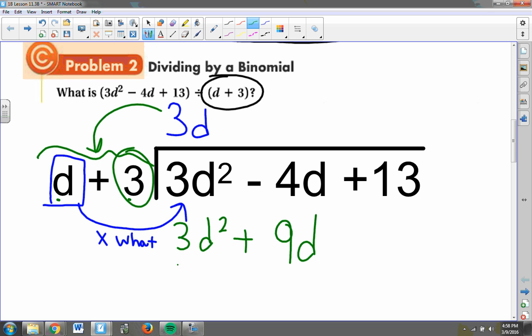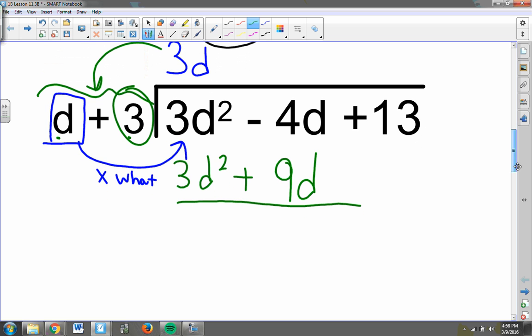And now I subtract. So the 3d squared minus 3d squared will be nothing. Negative 4d minus 9d gives me negative 13d. And now I bring down my plus 13.